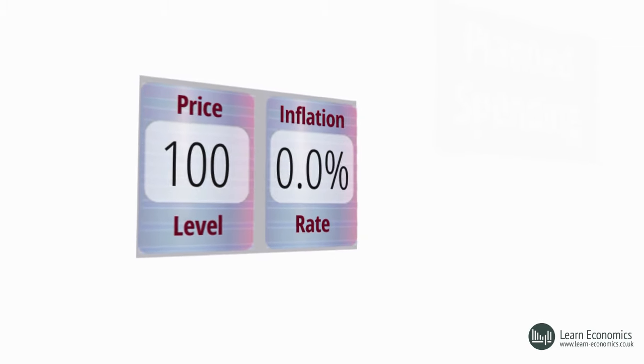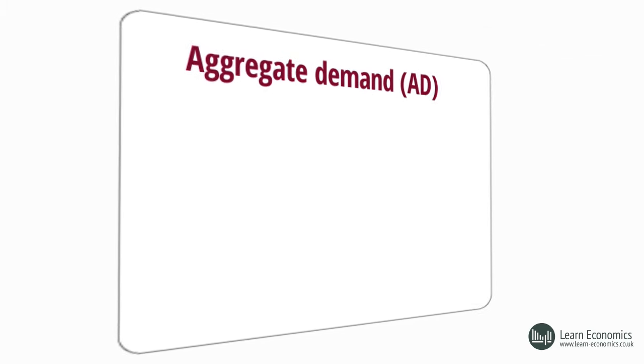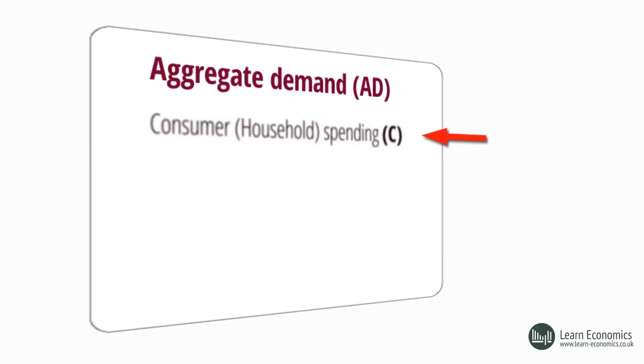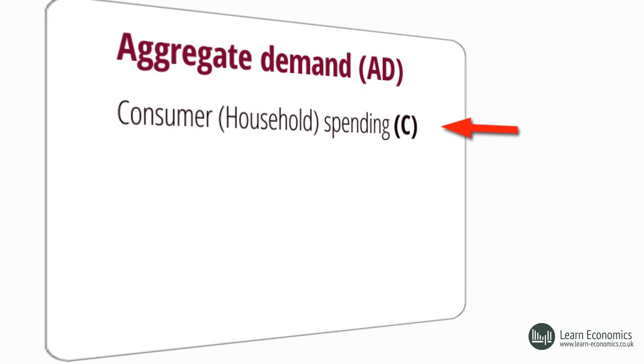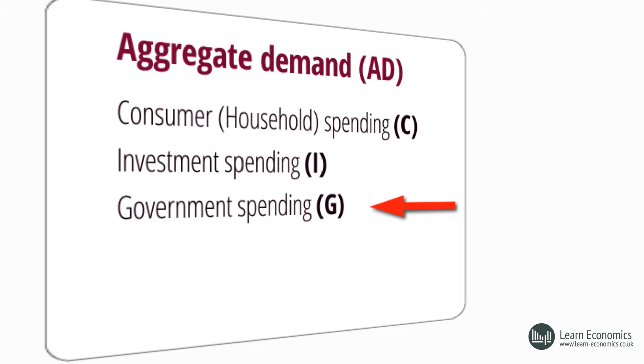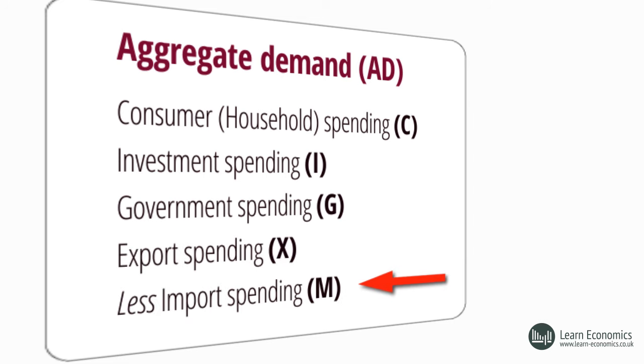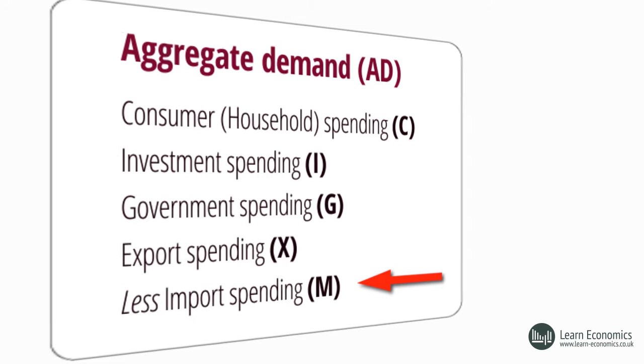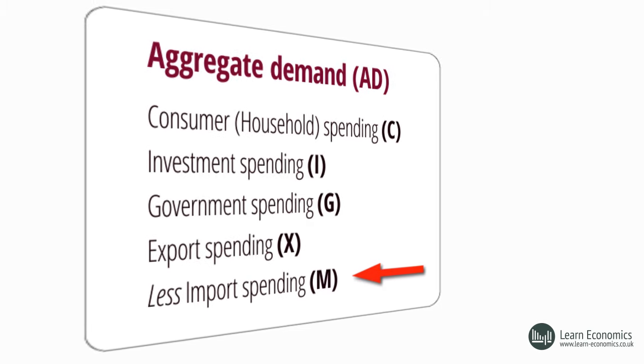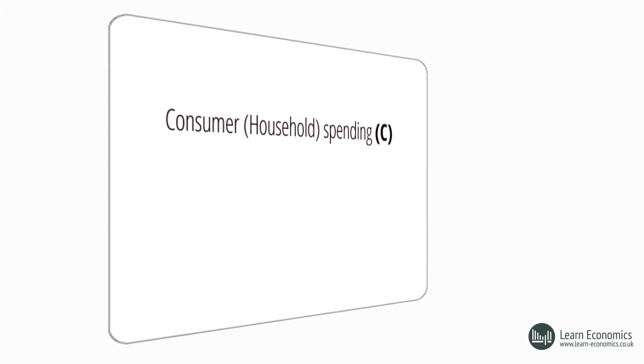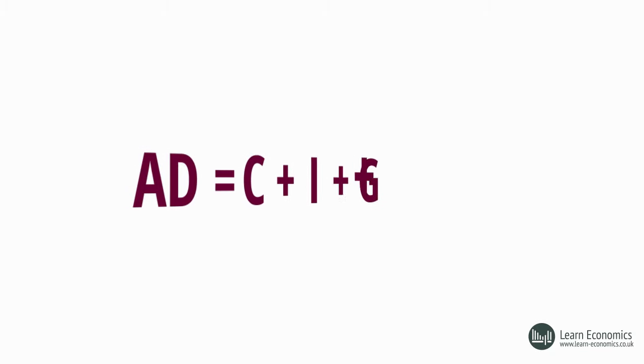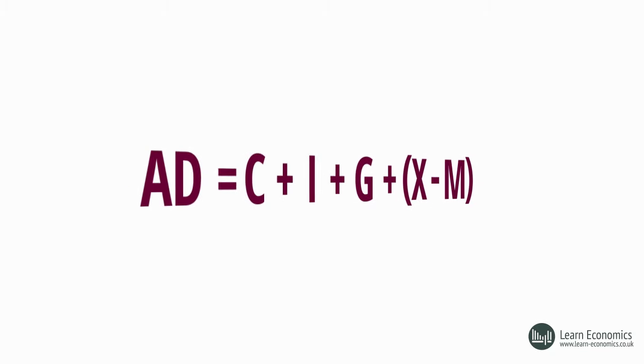An economy's aggregate demand, or AD, is comprised of private sector spending, of which consumer spending is the largest component, spending by firms on capital goods, called investment, government spending on public goods, merit goods, and transfers, plus net export spending, which is overseas spending on an economy's exports, less spending on imports. From this, we derive the AD equation, which is AD equals C plus I plus G plus X minus M.